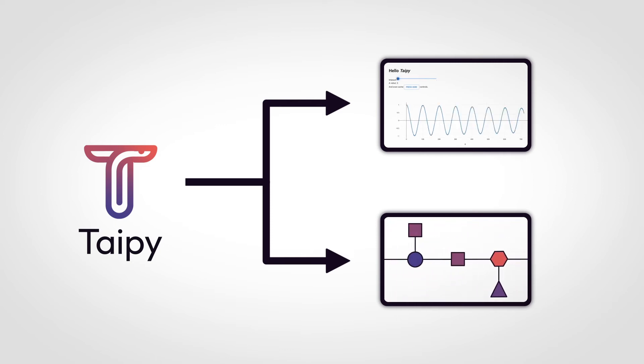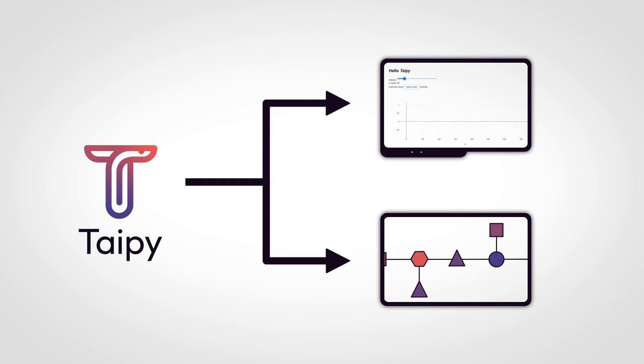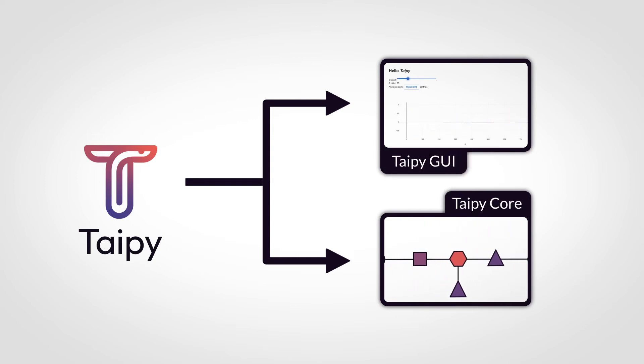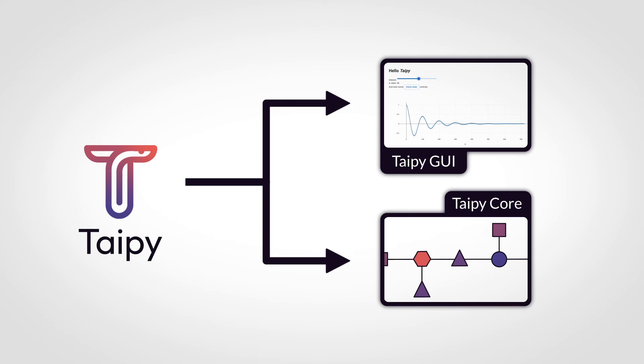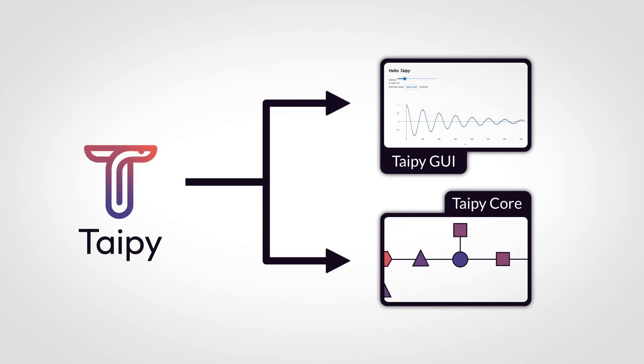TypePi is composed of two independent components: TypePi GUI and TypePi Core for scenario and pipeline management. Let's first show how easy it is to build a graphical user interface with TypePi.